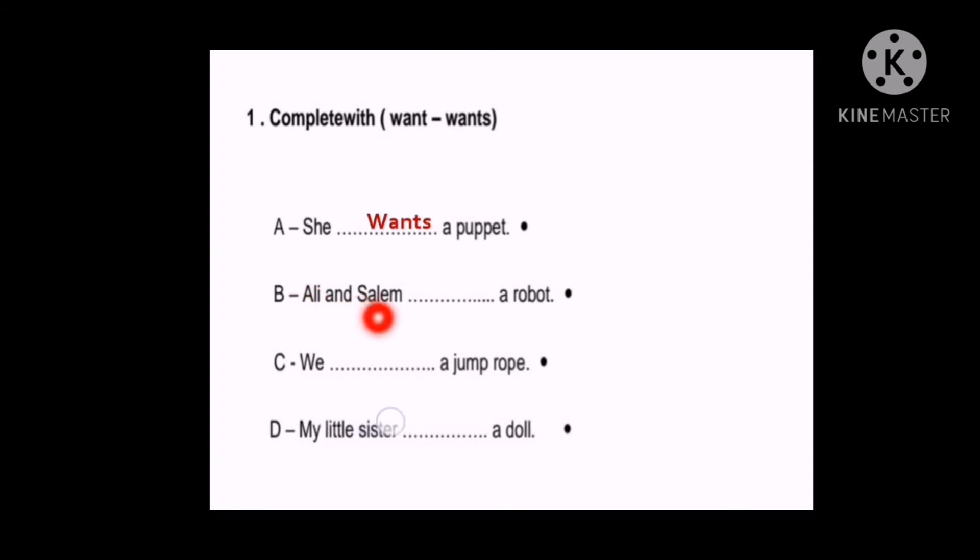B: Ali and Salim space a robot. So here in this space what shall we write? Want or wants? Look at the subject. Ali one, Salim two. So they are plural. In the plural case, Ali and Salim want.